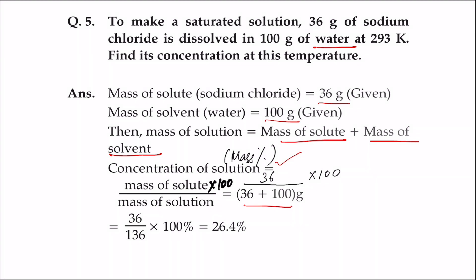That is 136 grams. So concentration of the solution in terms of mass percent will be mass of solute divided by mass of solution into 100. That is 36 divided by 136 into 100.